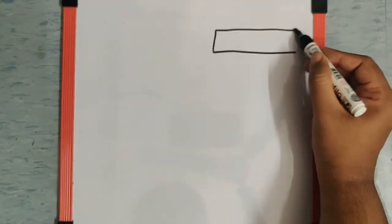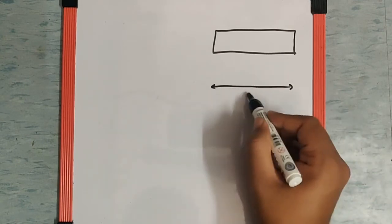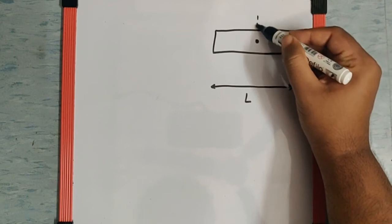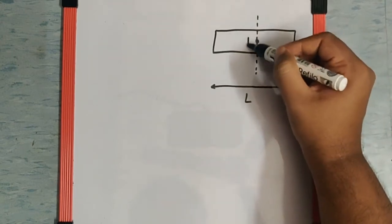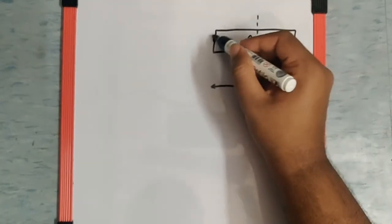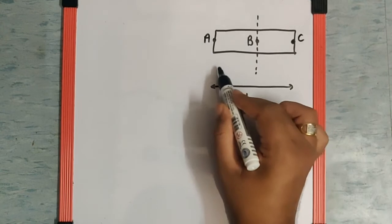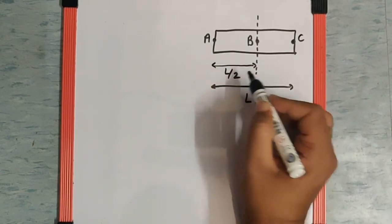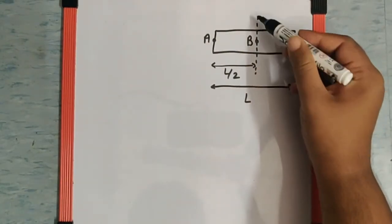So this is the rod of length L. The axis which they are talking about, the first part is this where the point over here is B, this point is A, this point is C, and so this length is given as L by 2.